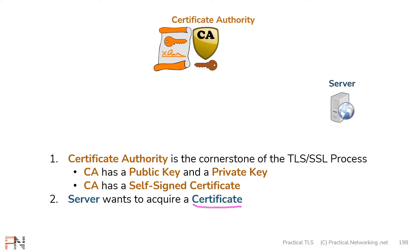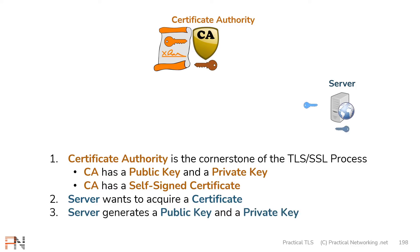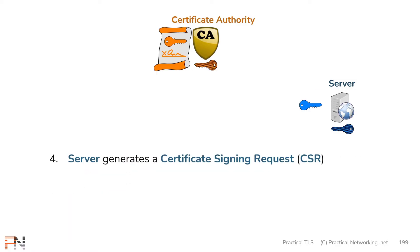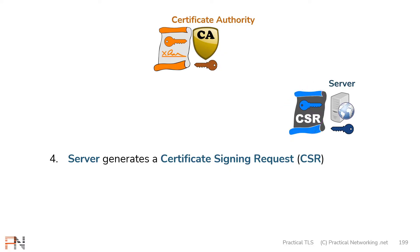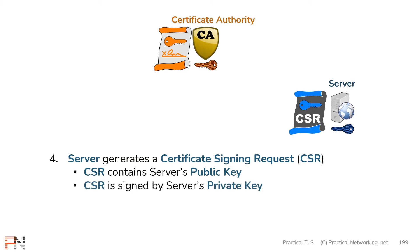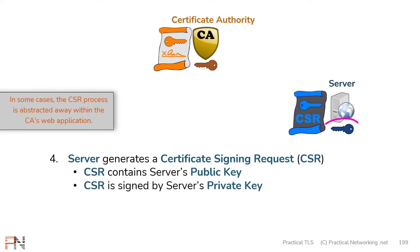The server is anything that wants to prove its identity, and to do so it's going to need a certificate. To get a certificate, the server starts by generating its own public and private key. Then the server generates a CSR, or certificate signing request — this is simply a file used to request an actual certificate. Inside this CSR is the server's public key, and the CSR is signed with the server's private key.